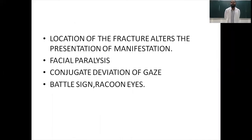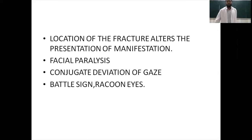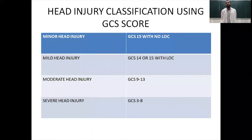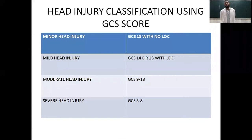The location of the fracture alters the clinical manifestations — patients may have facial paralysis, conjugate deviation of gaze, and Battle sign or raccoon eyes. Head injury is classified according to GCS score: minor head injury is GCS 15 with no loss of consciousness; mild head injury is GCS 14 or 15 with a history of loss of consciousness; moderate head injury is GCS 9 to 13; and severe head injury is GCS 3 to 8.